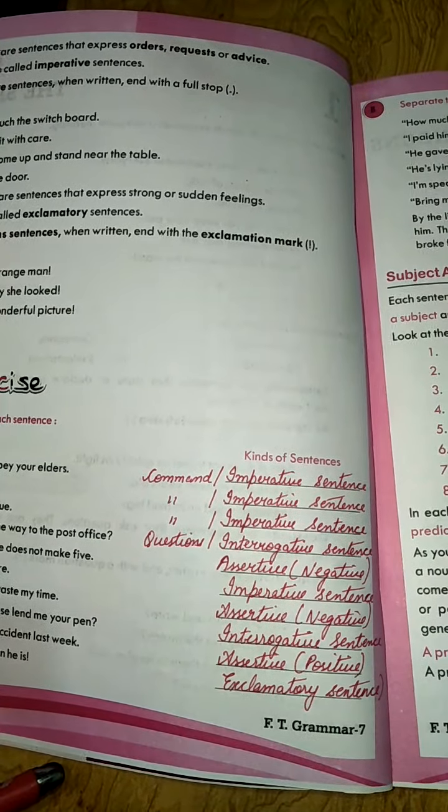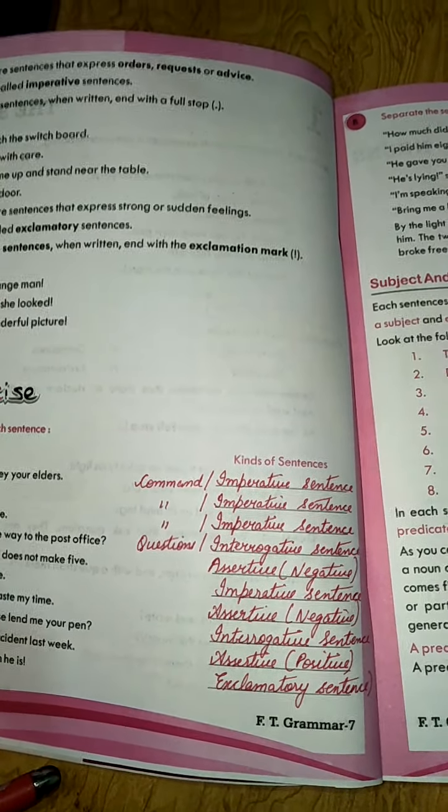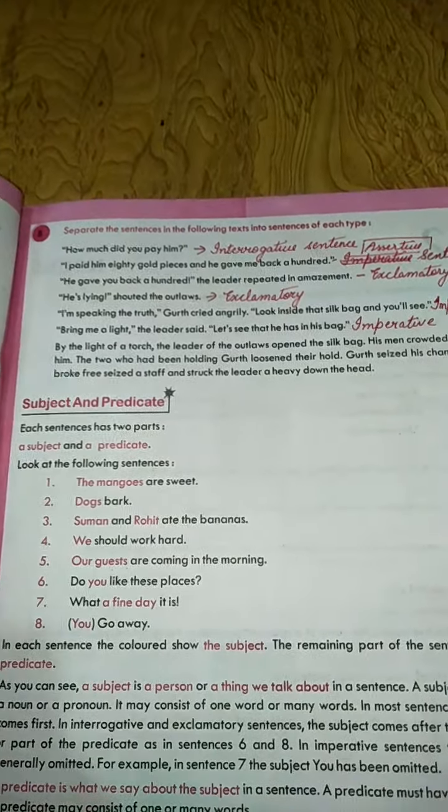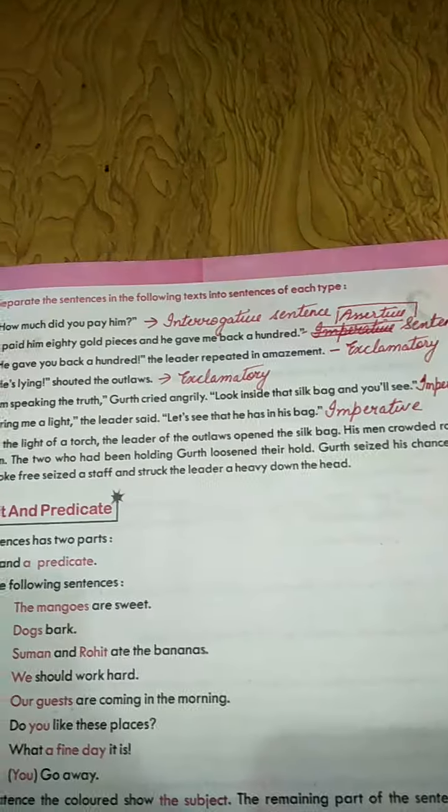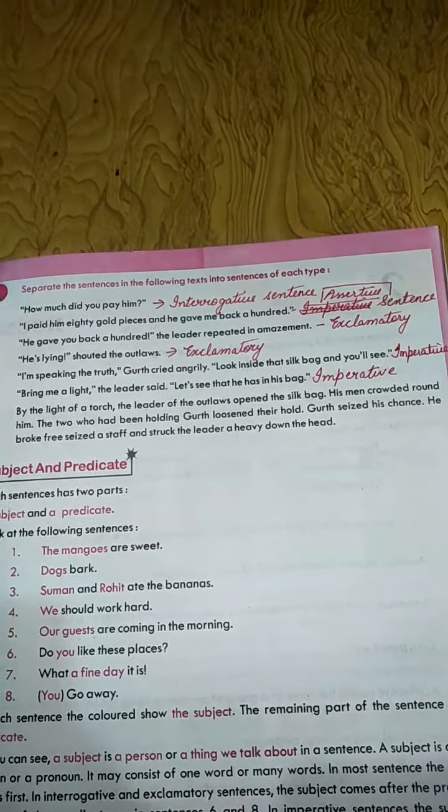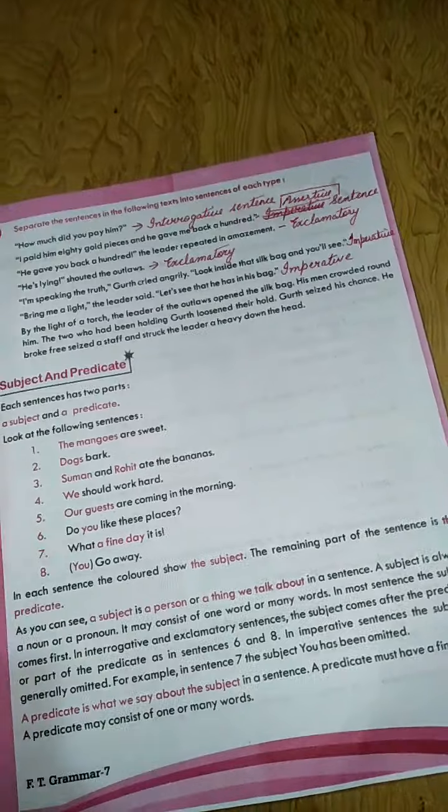Exercise number B is the same. We have given sentences. We have already completed this exercise. One topic which was not discussed is subject and predicate.